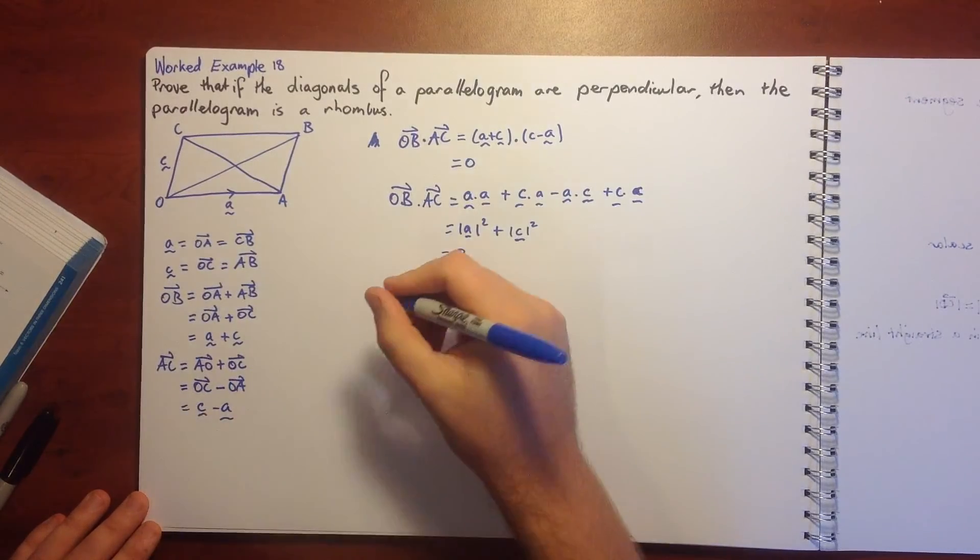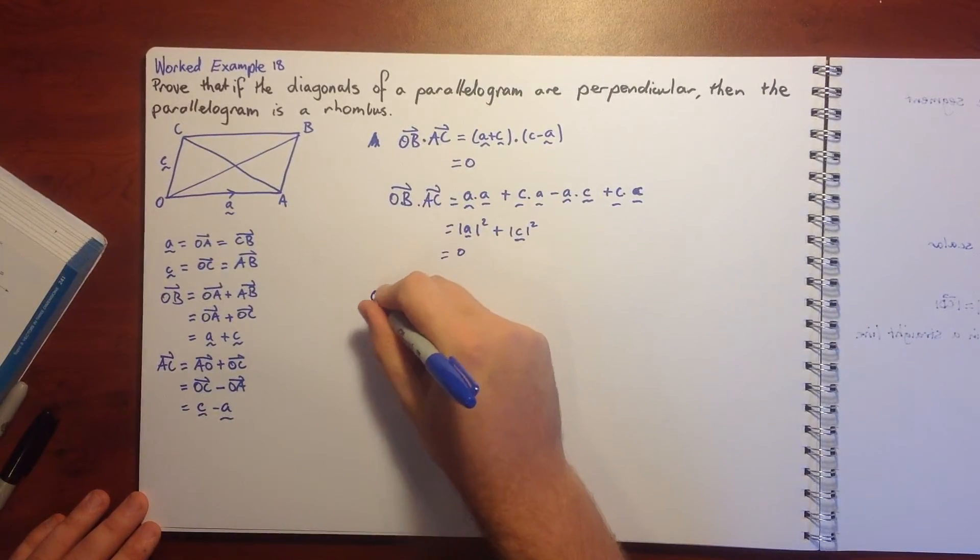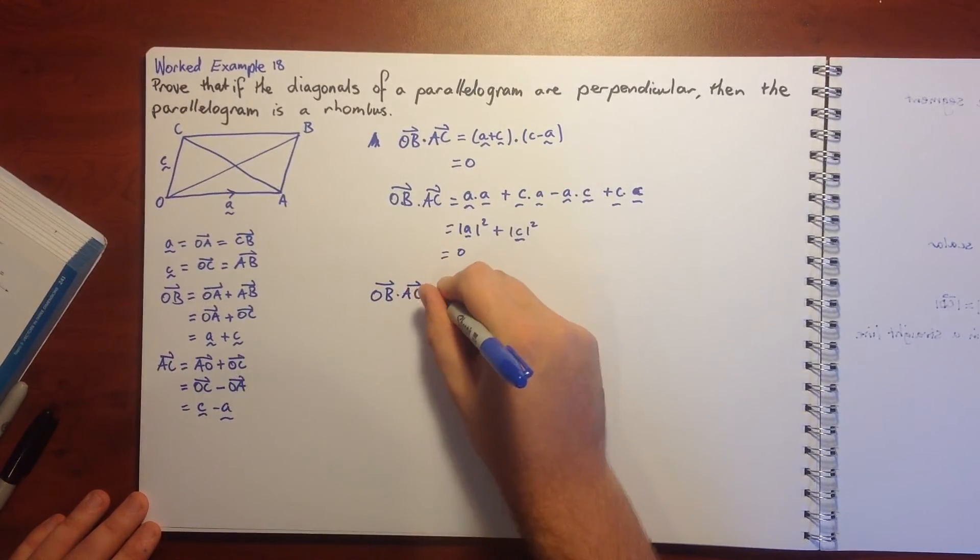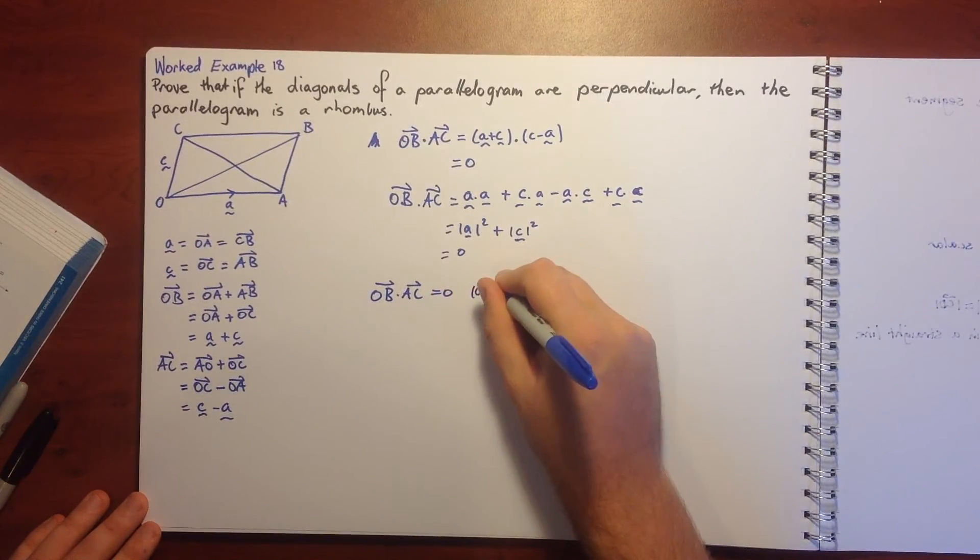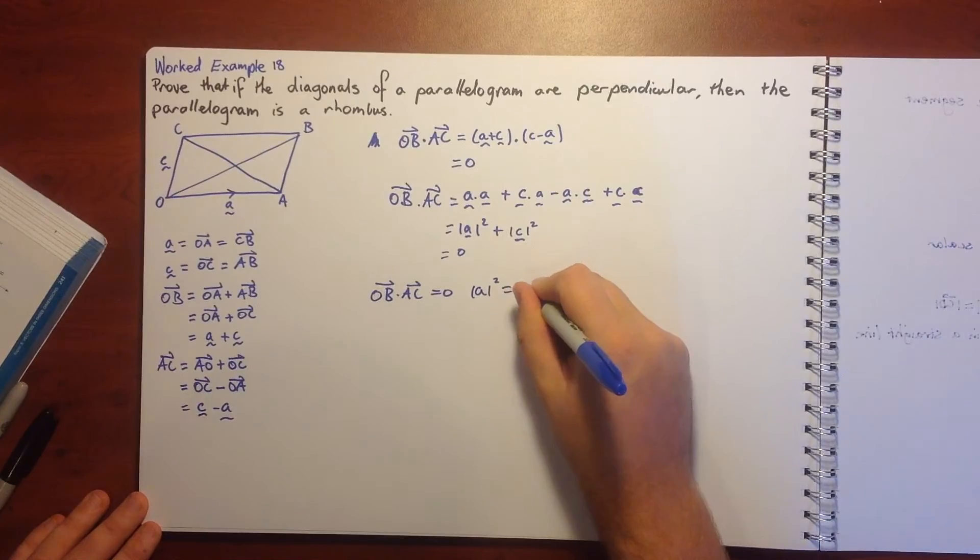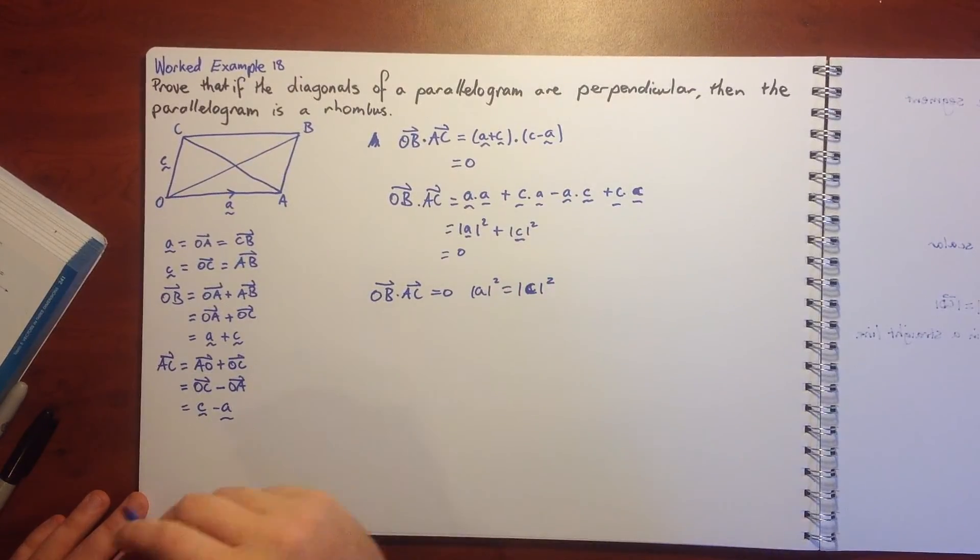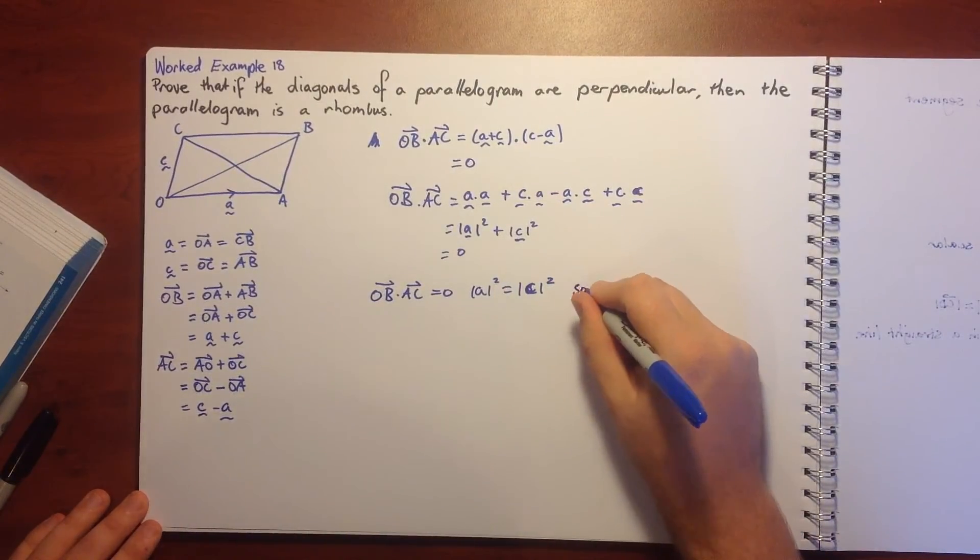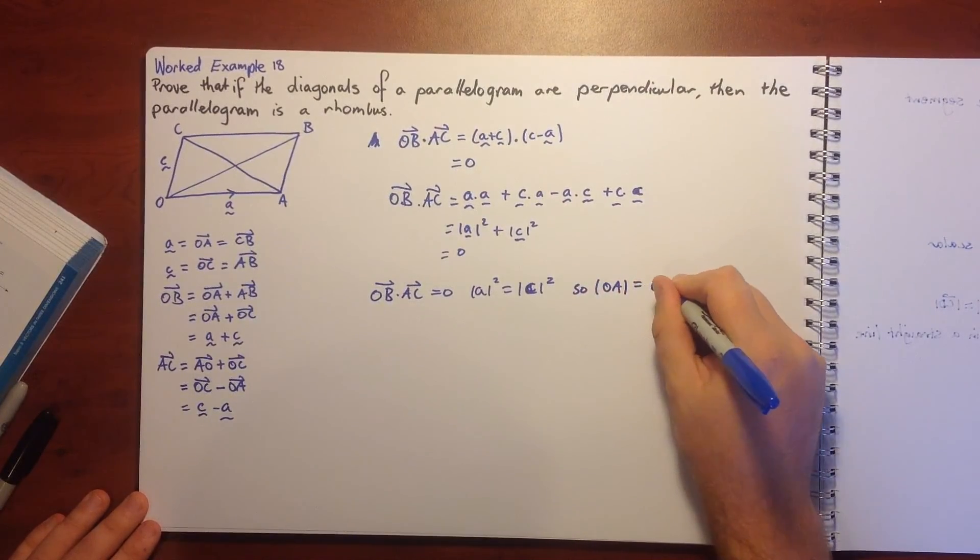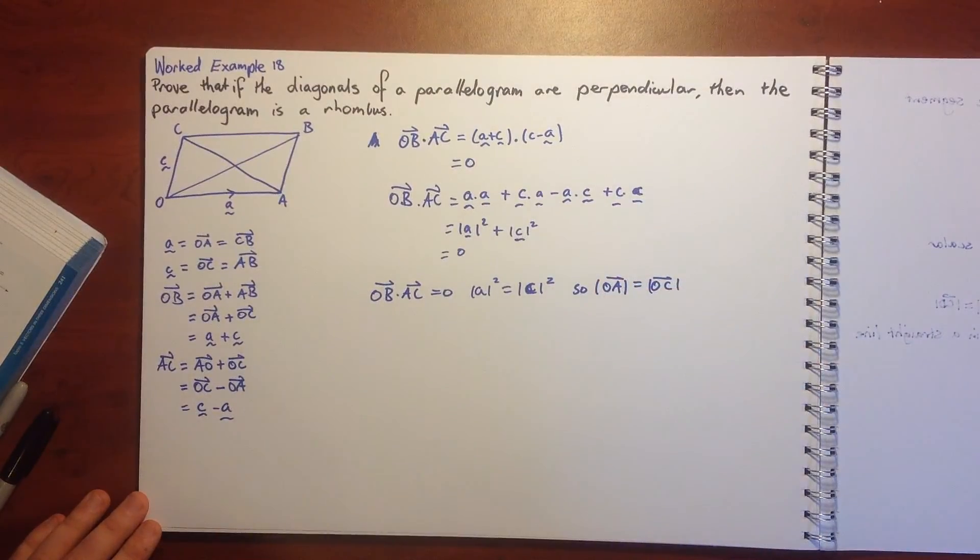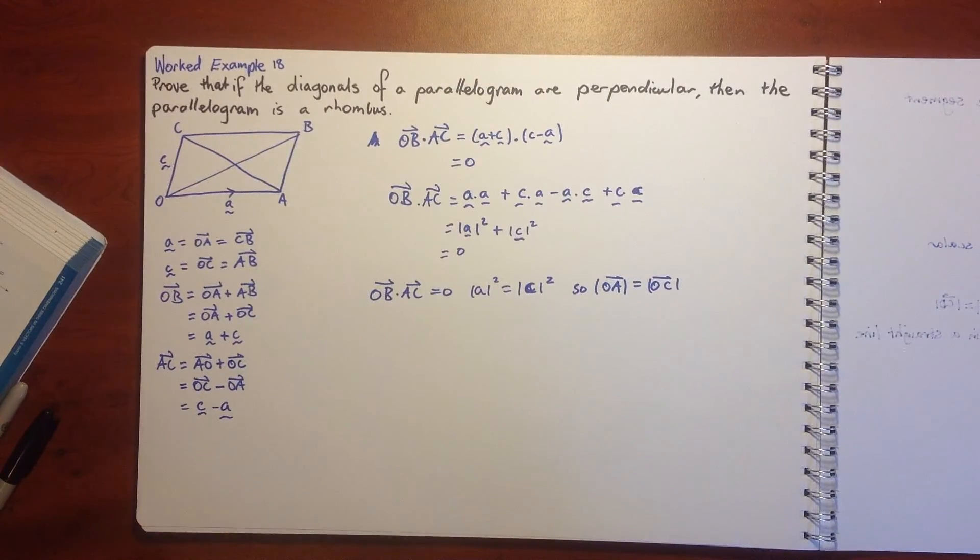Since OB dot AC equals zero, then the magnitude of A squared equals the magnitude of C squared. So the magnitude of OA equals the magnitude of OC. The length of OA is equal to the length of OC. Therefore, OABC is a rhombus.